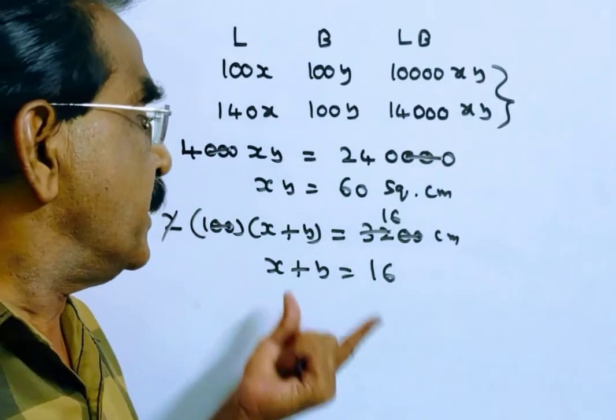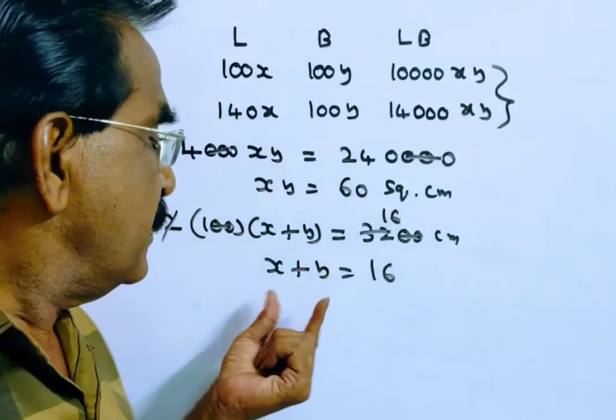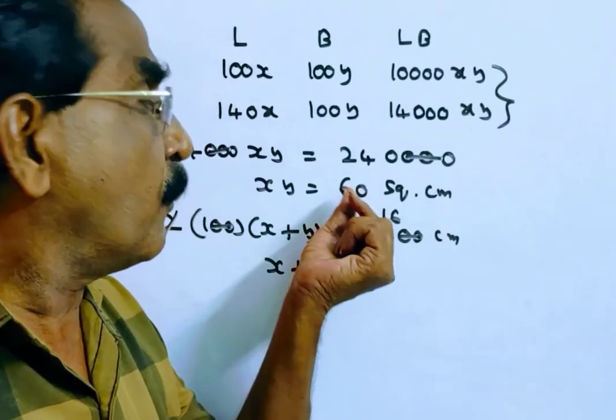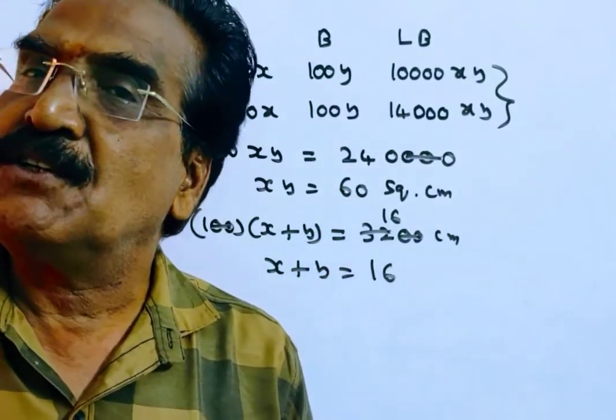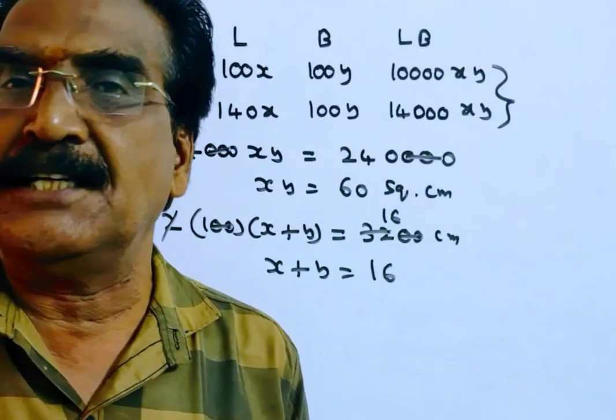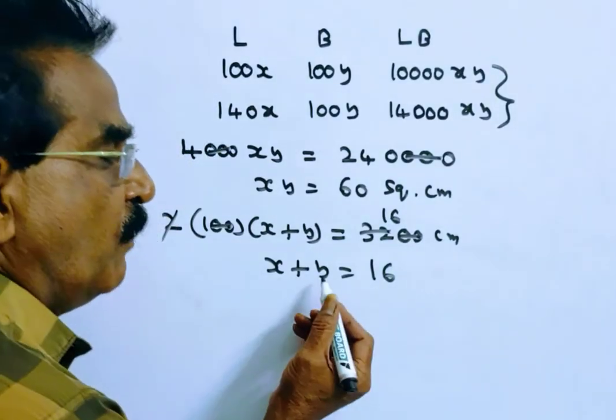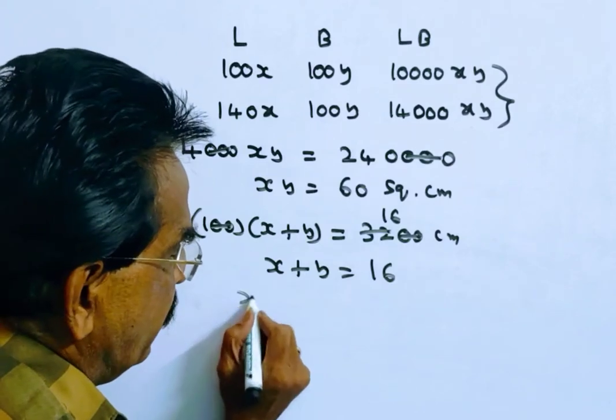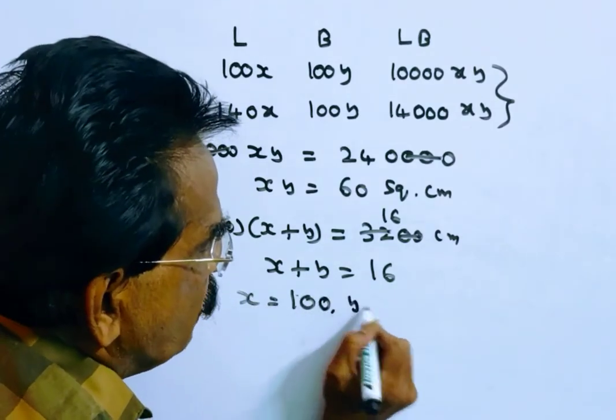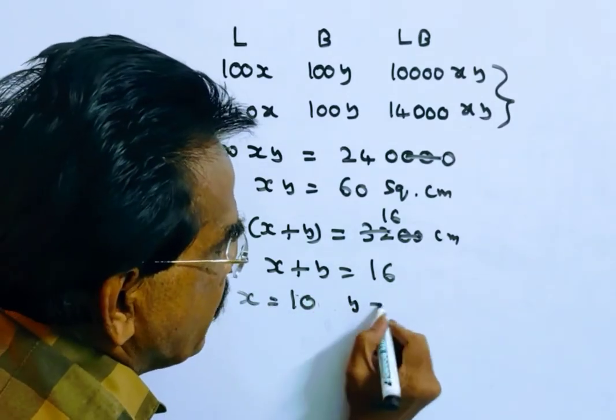That is 3,200 centimeters. xy is equal to 60, sum 16, product 60, so x is equal to 10, y is equal to 6. 10 plus 6 is 16, 10 into 6 is 60. We want breadth.